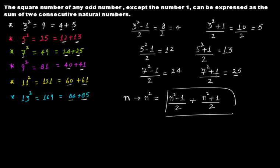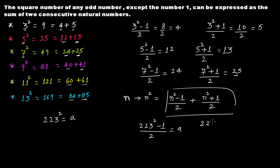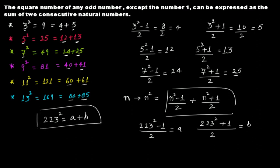So if someone asks you to write 223 squared using this pattern, you can do it. Simply put 223 in the formula: compute (223² − 1) ÷ 2 — let's call that a — and (223² + 1) ÷ 2 — let's call that b. Then 223² = a + b. I'll leave the calculation for you to solve.